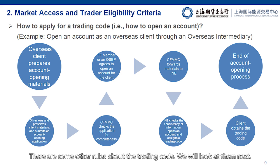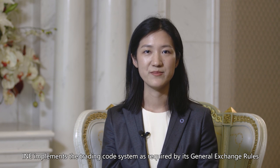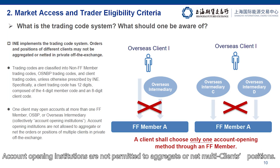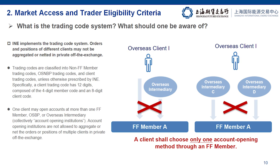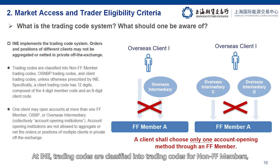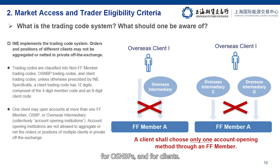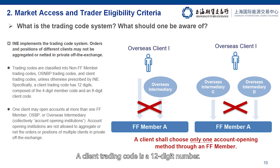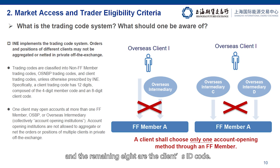There are some other rules about the trading code. INE implements the trading code system as required by its general exchange rules and the trading rules. Account opening institutions are not permitted to aggregate or net multi-client positions. At INE, trading codes are classified into trading codes for non-FF members, for OSMVPs, and for clients. A client trading code is a 12-digit number. The first four digits are the member's ID code, and the remaining eight are the client's ID code.